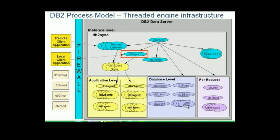EDUs stands for Engine Dispatchable Unit, which is basically an agent or thread. Also, per request you may have other threads. On the left side we also see some rectangles in pink: DB2WDog or DB2WatchDog, DB2VEND, DB2FMP, and DB2ACD. These are other processes — not threads — and they are described in the book.